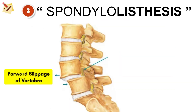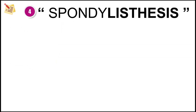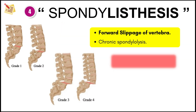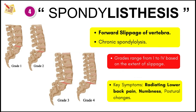The last one is spondylolisthesis. Here, one vertebra slips forward over the one below it. It can also result from chronic spondylolysis or degenerative changes. Grades range from 1 to 4 based on the extent of slippage. Symptoms mainly include radiating lower back pain, leg pain due to nerve compression, and postural changes.